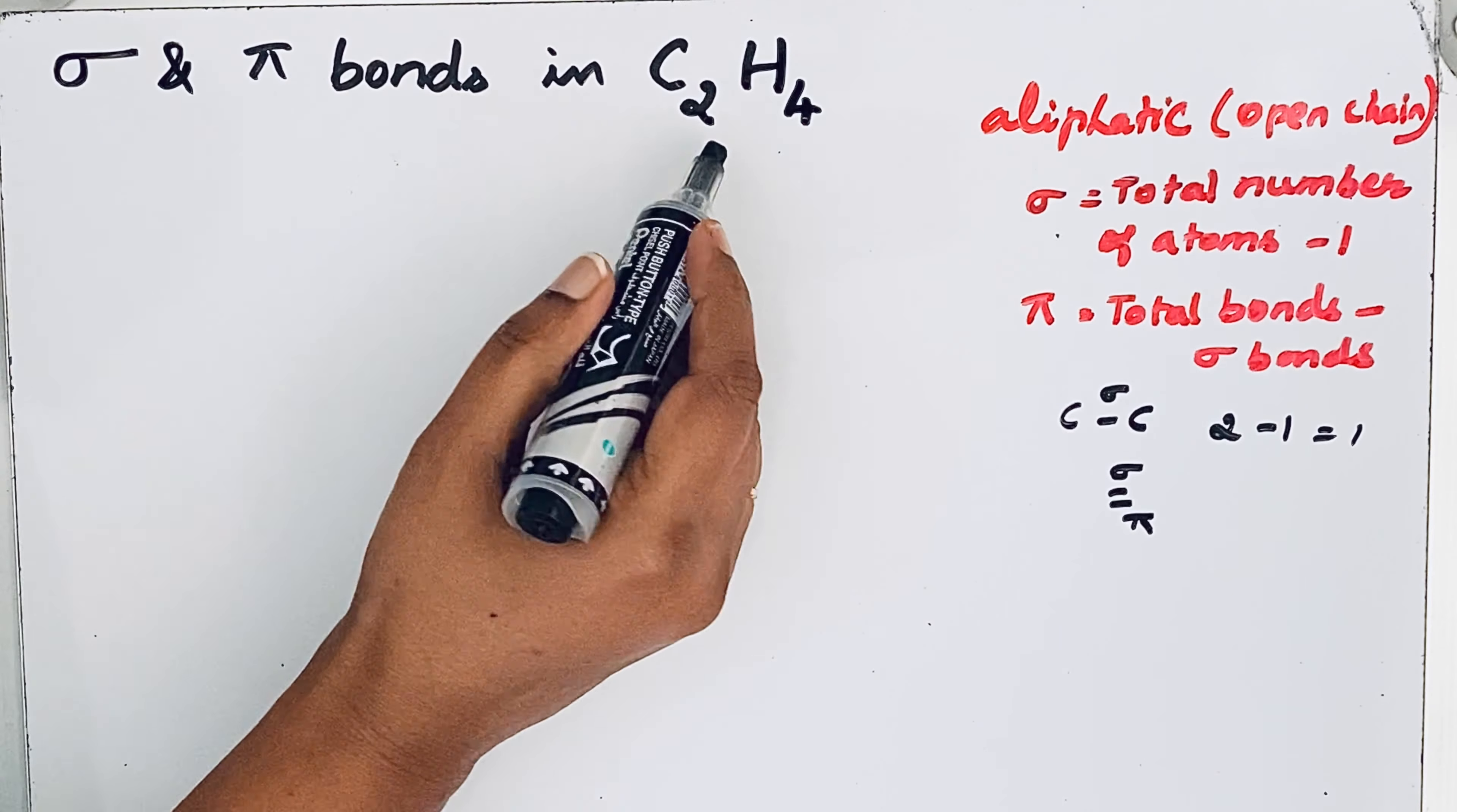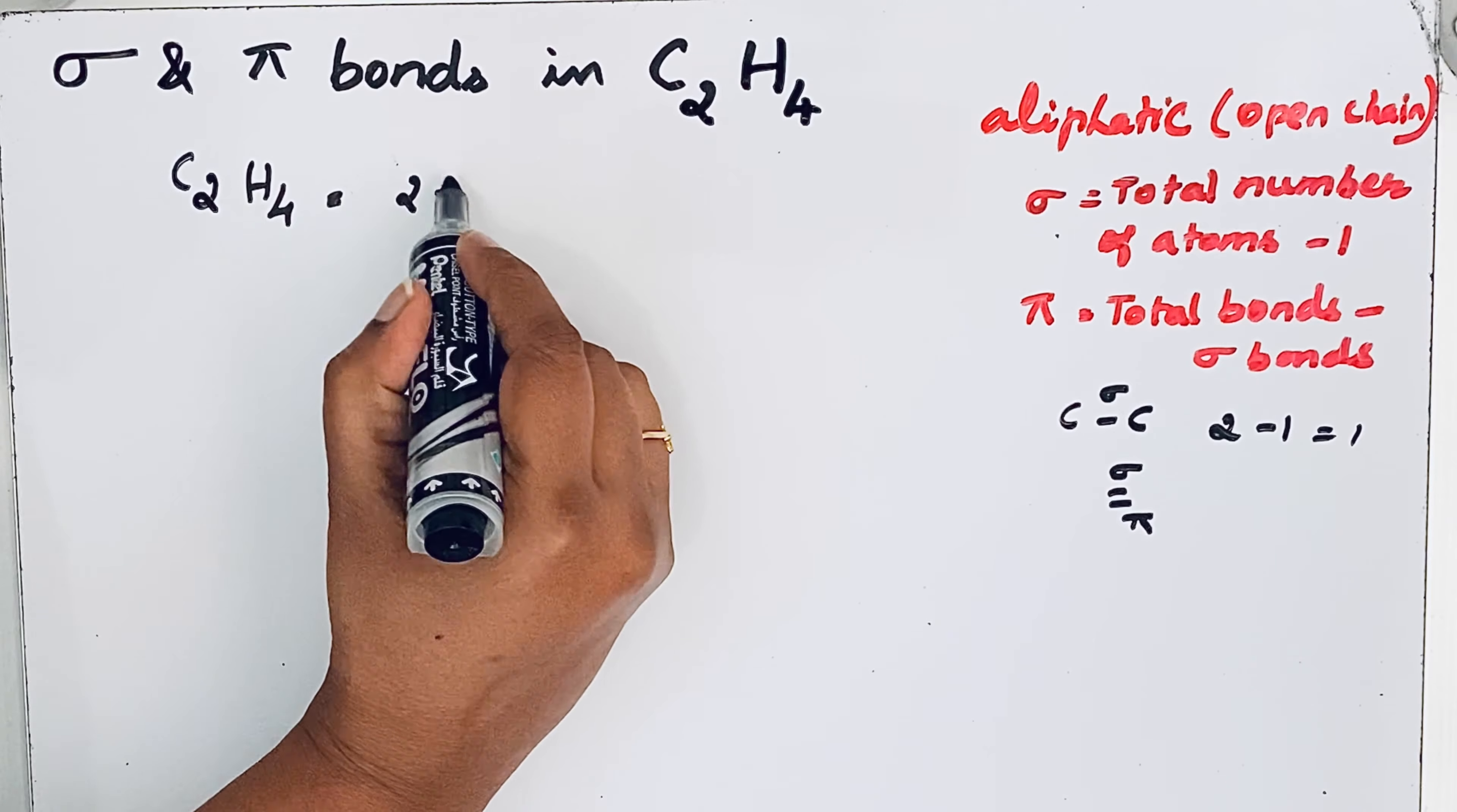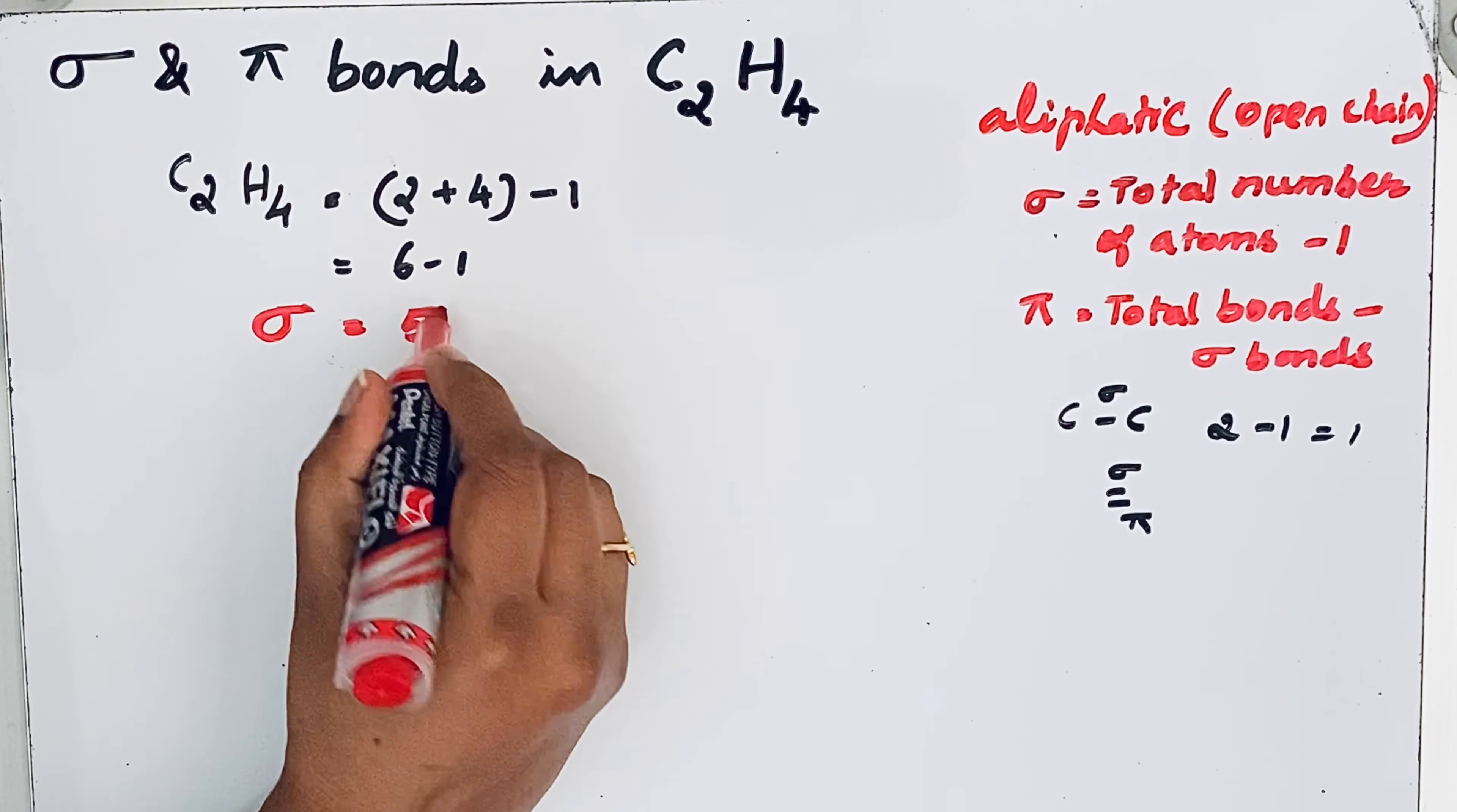Now let us see for C2H4. Total number of atoms: carbon and hydrogen, so 2 plus 4 minus 1. That gives 6 minus 1. We have five sigma bonds.